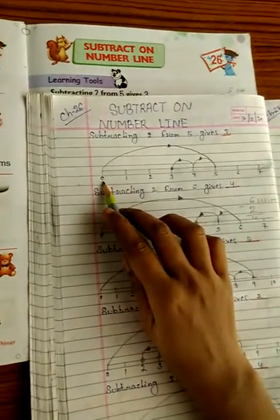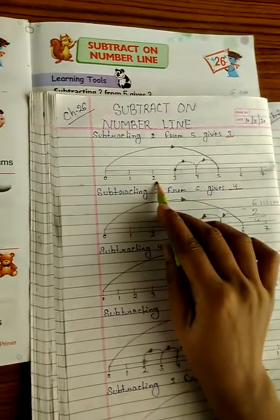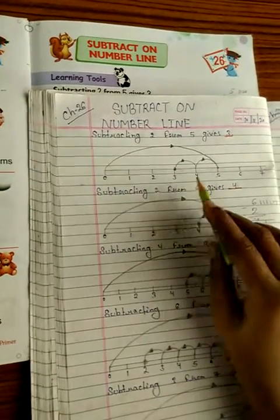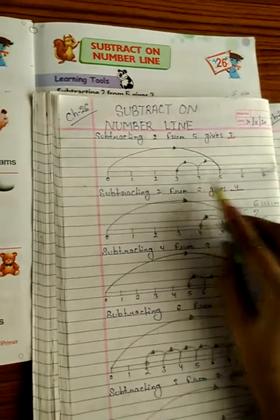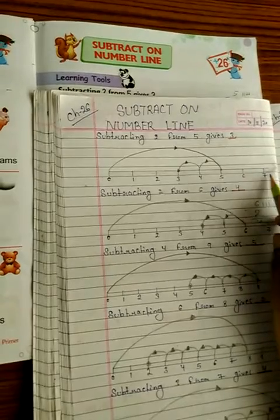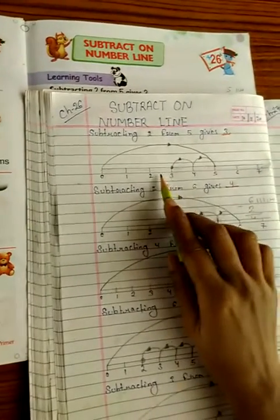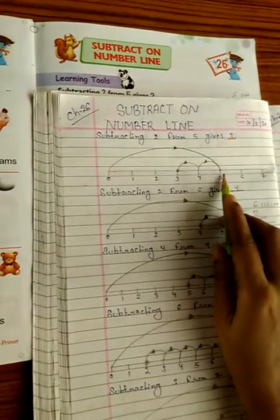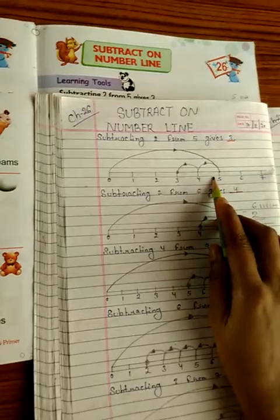First, 0, 1, 2, 3, 4, 5, 6, 7. Like that you will draw in your math copy.